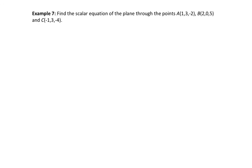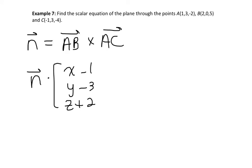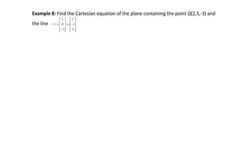Find the scalar equation of the plane through those three points. You'll want to find the normal by computing AB crossed with AC, then dot that normal with (x minus any one of the points) and set it equal to zero. One more: find the Cartesian equation of the plane containing point Q and a given line. Use the direction along the line along with the direction from Q to a point on the line, then find the cross product normal and expand. Check your answers with each other in class, and you can always ask me. See you later.